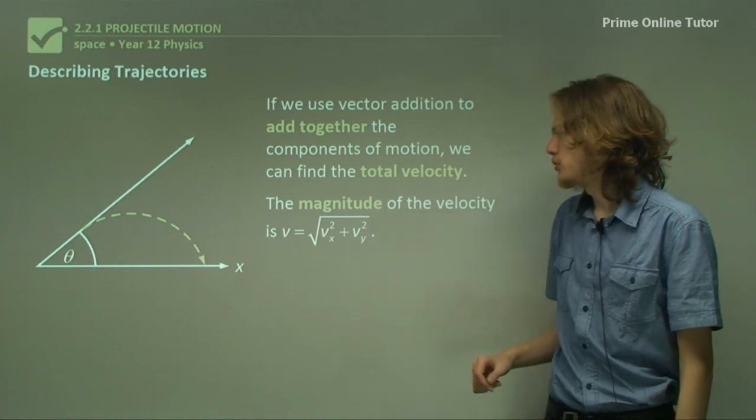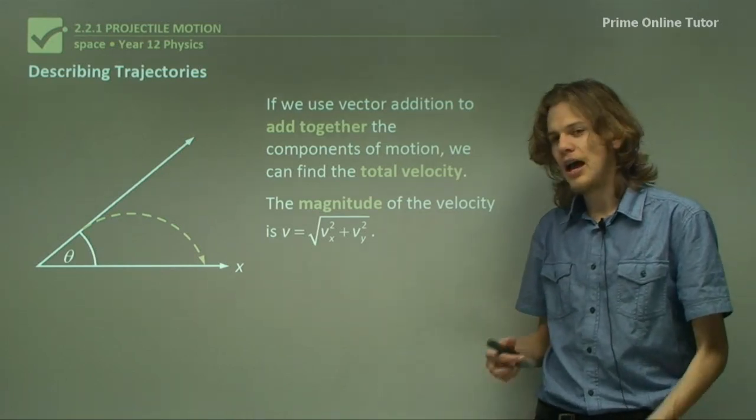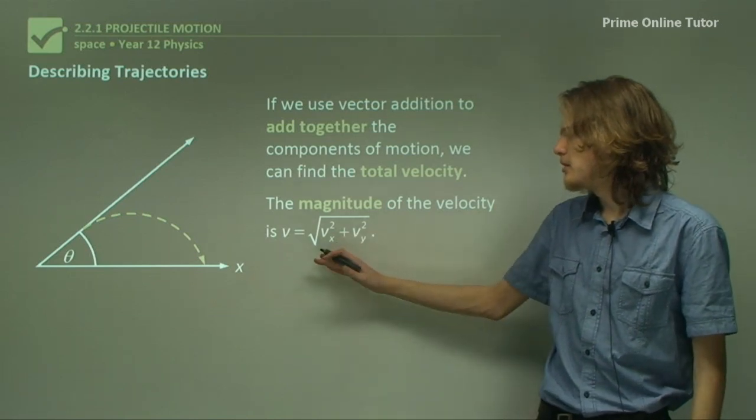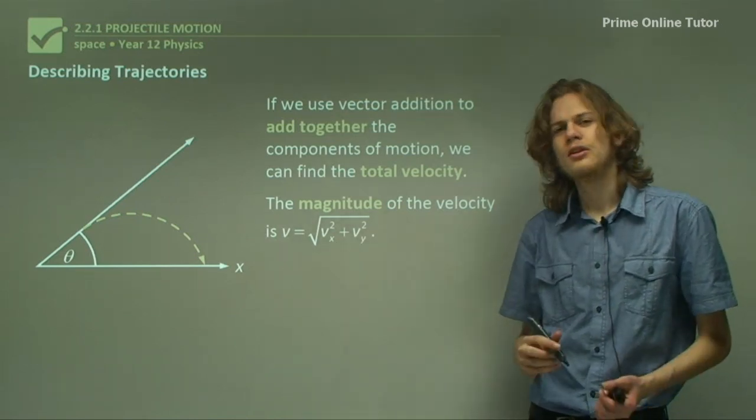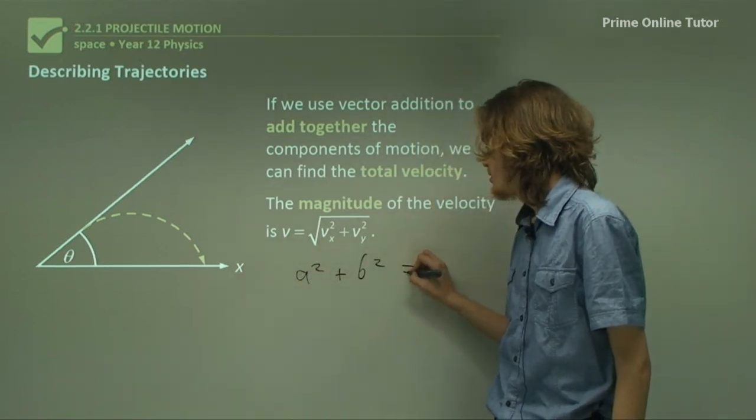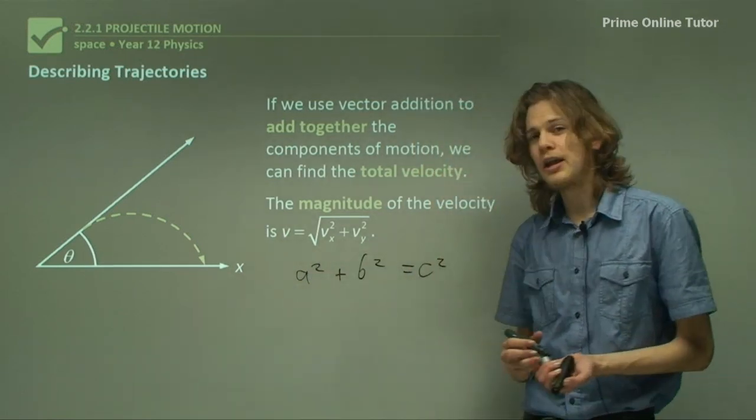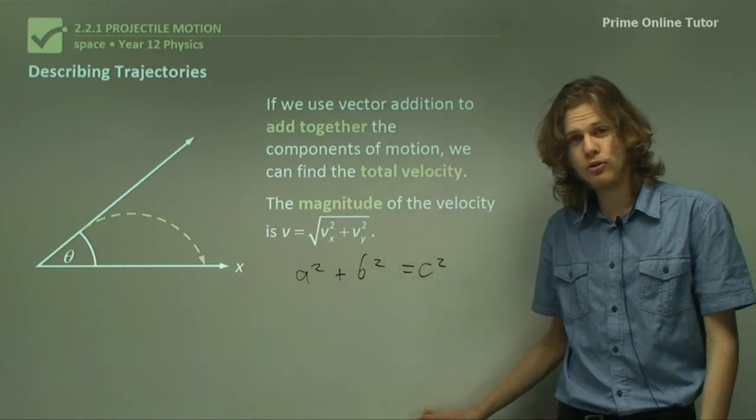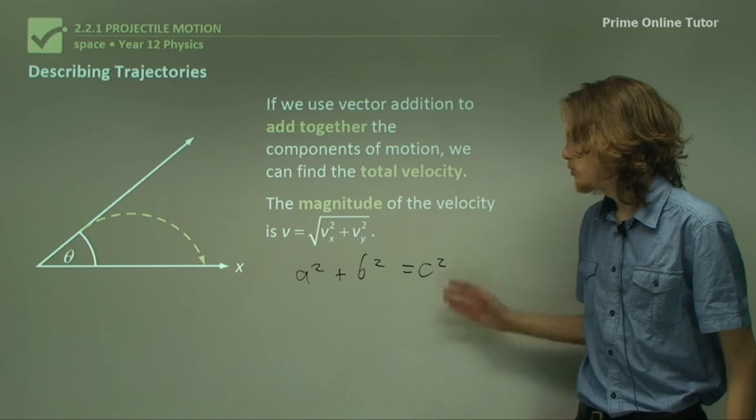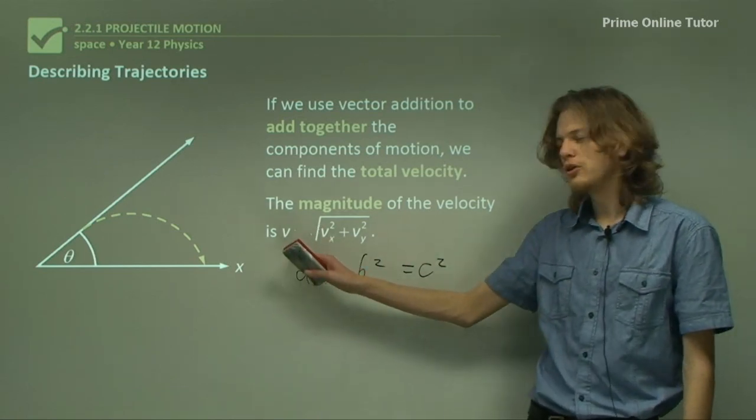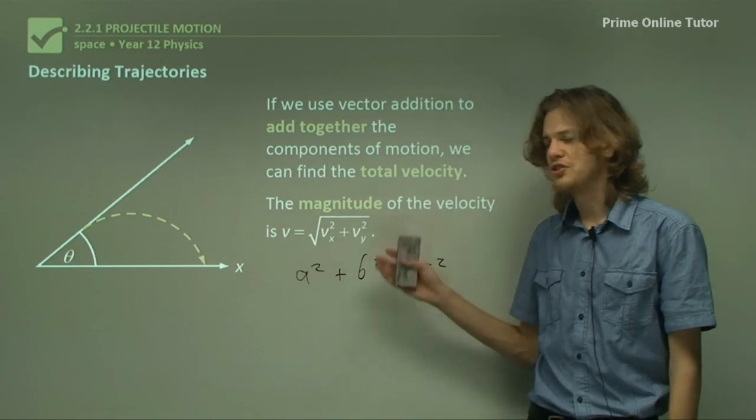The magnitude of the velocity will be the same as adding any right-angled triangle together. It will simply be the length of the hypotenuse. We know that a squared plus b squared equals c squared. That is, the two shorter sides of a right-angled triangle can be squared and added together to form the square of the hypotenuse. If we take the square root of both sides, we can see that the magnitude of the total velocity will be given by this expression here.